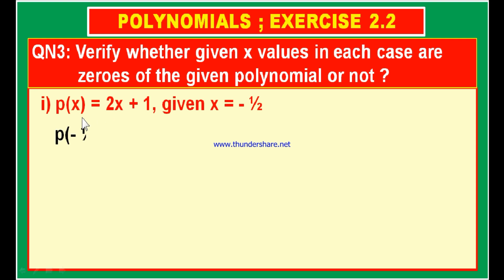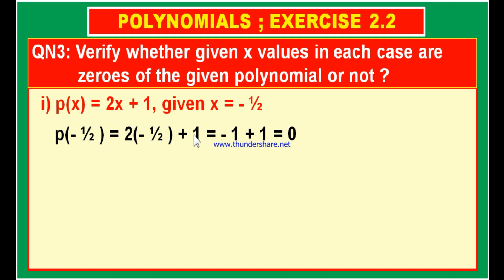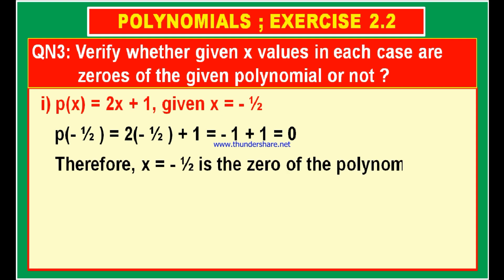Now, P of minus 1 by 2 is equal to 2 into minus 1 by 2 plus 1. This 2 cancels once: 1 into minus 1 is minus 1 plus 1. What is minus 1 plus 1? It is 0. Since the value of the polynomial becomes 0 when we substitute minus 1 by 2, we can say that minus 1 by 2 is zero of the polynomial P of x. Therefore, x is equal to minus 1 by 2 is the zero of the polynomial P of x.